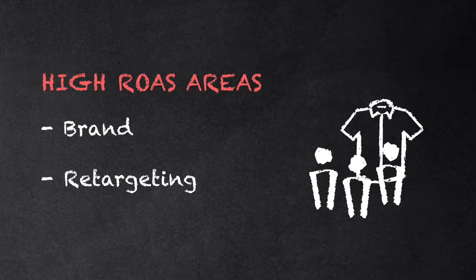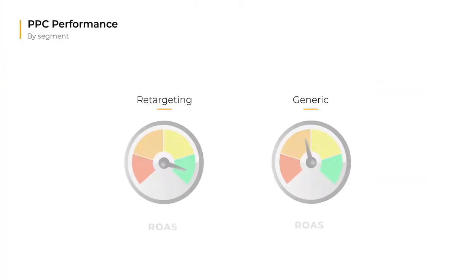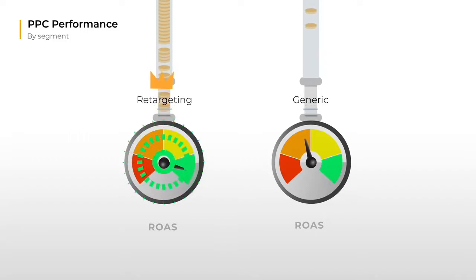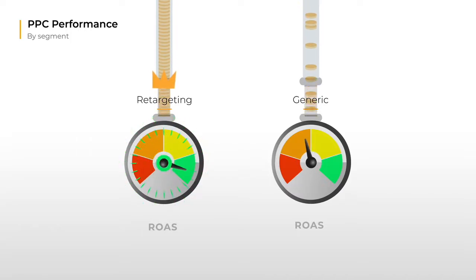Hence, the waste is in spending on ads that aren't needed. Let's consider a typical performance as reported by the ad platform. The retargeting campaign clearly looks more efficient, so ad budgets would preferably flow into this campaign. However, the ROAS as reported does not reflect the true value of both campaigns. This is where incrementality comes to the rescue.